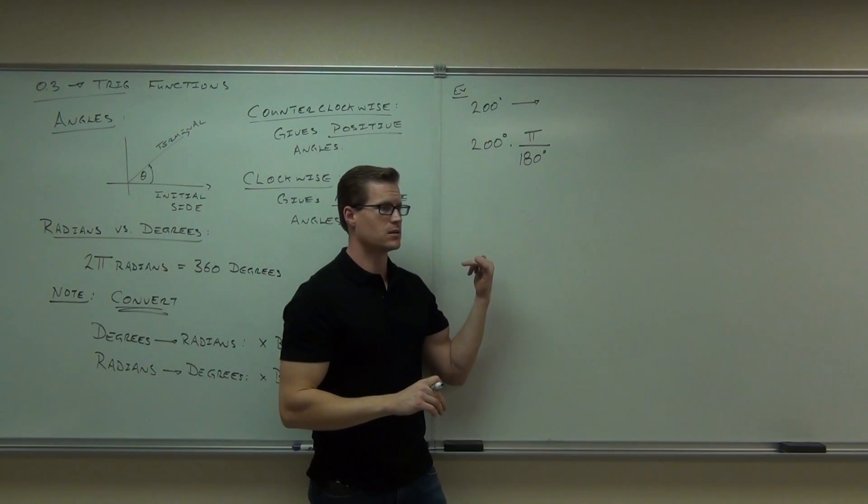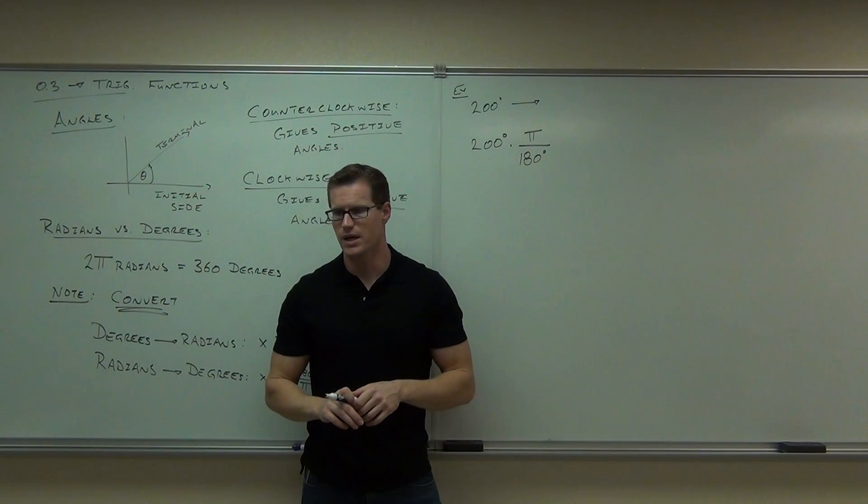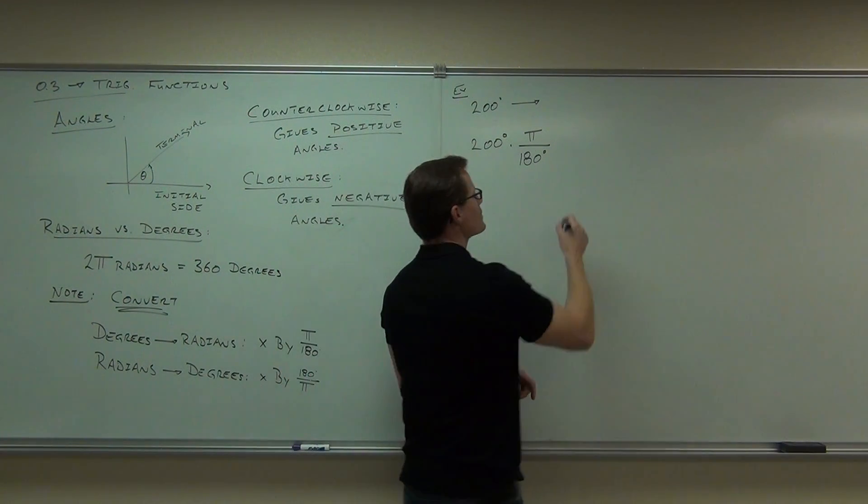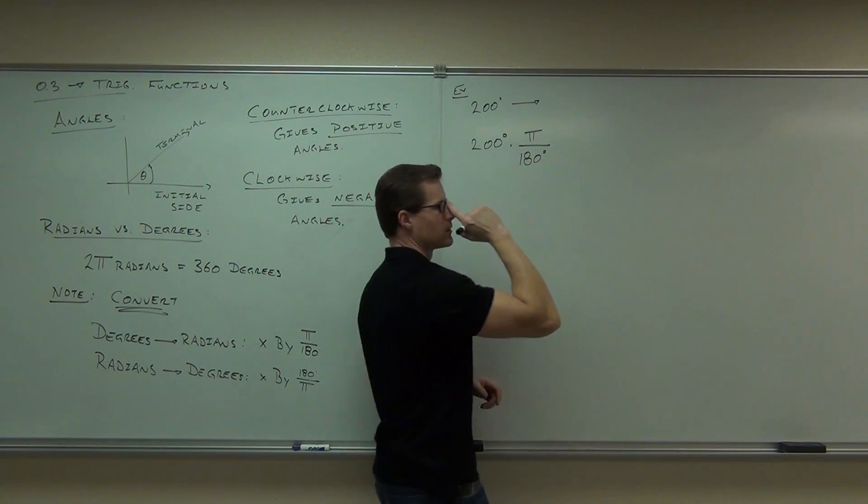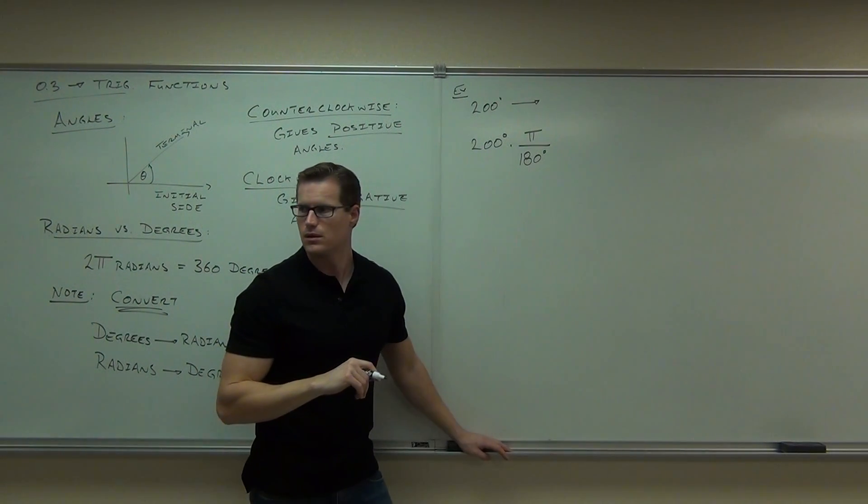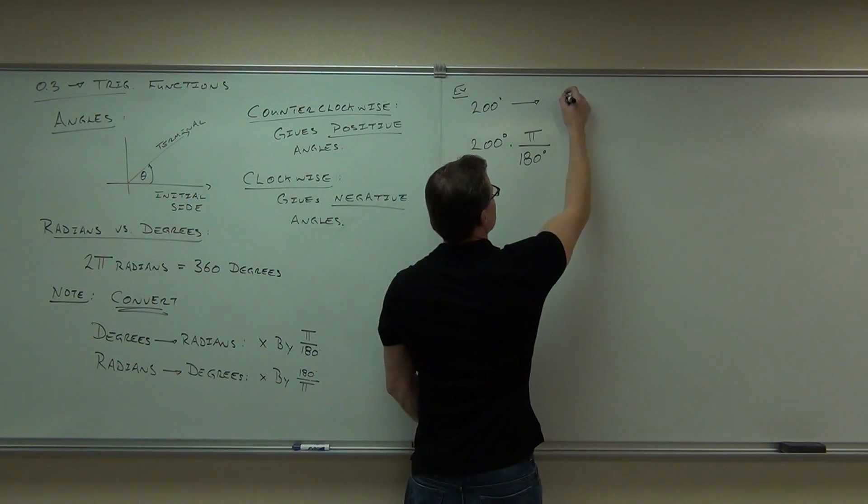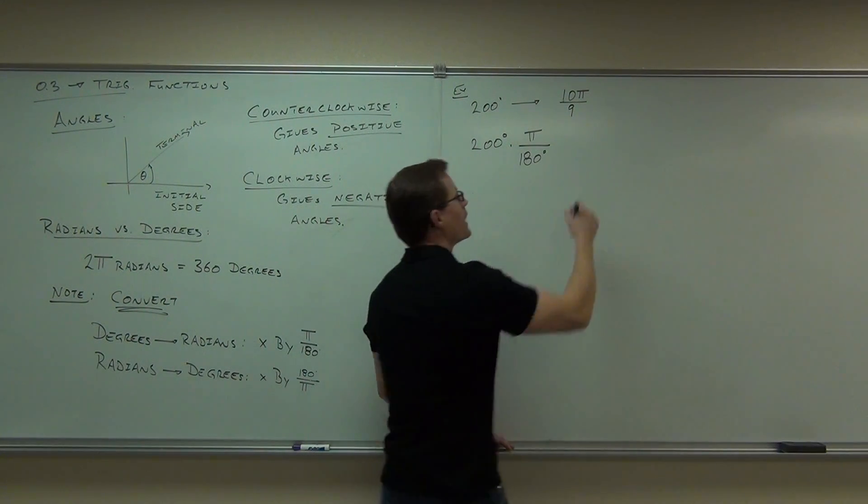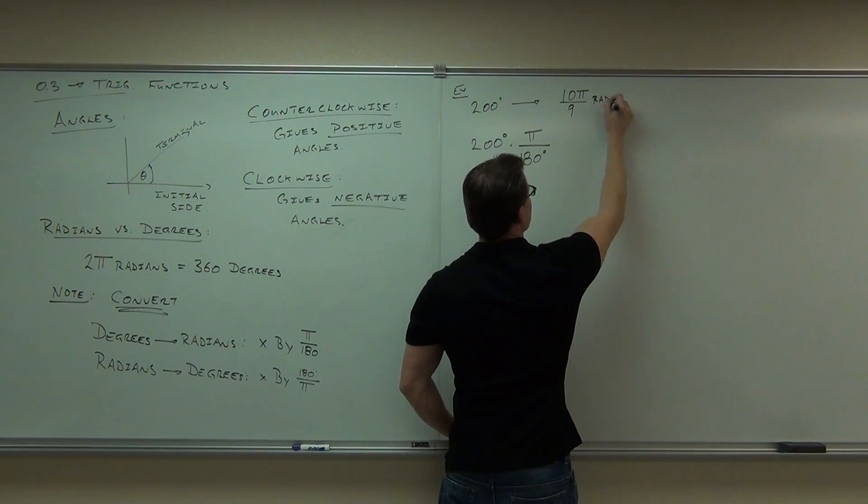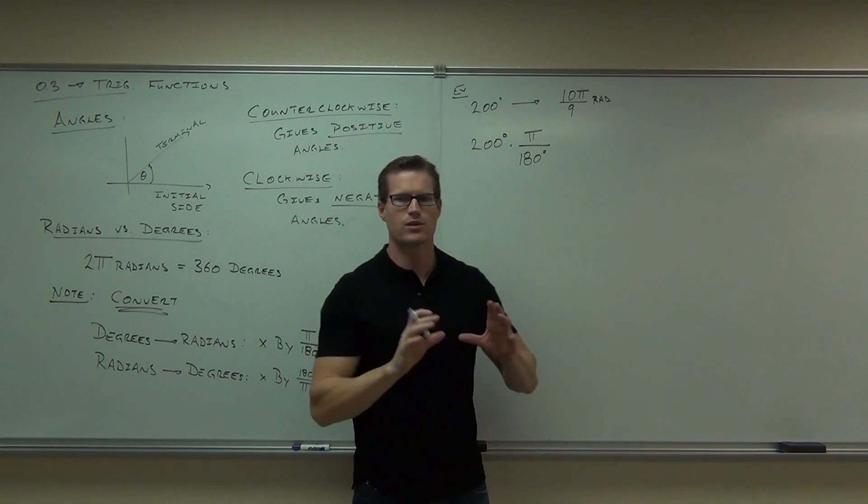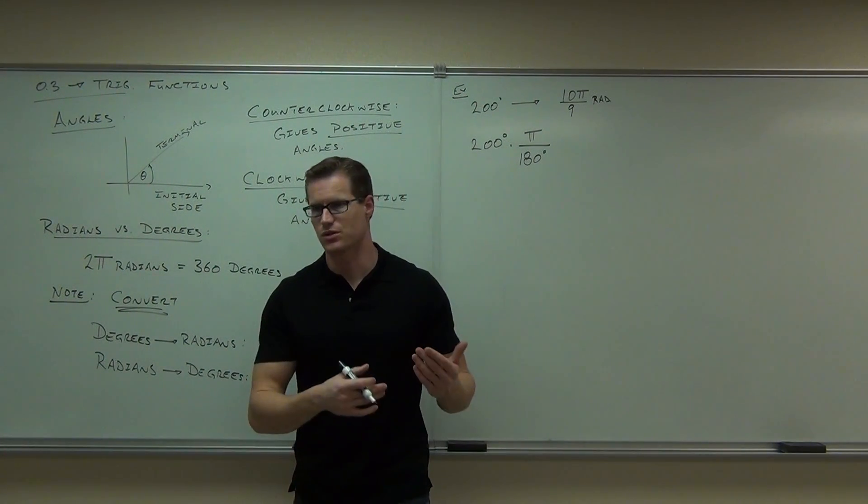Can you reduce that? Sure, go ahead and do that. You've got calculators, if you want to punch in the fraction, just press enter. What is this going to give us? 10 pi over 9. 10 pi over 9 radians. So, right there we know that 200 degrees and 10 pi over 9 radians is exactly the same measure of a certain angle.